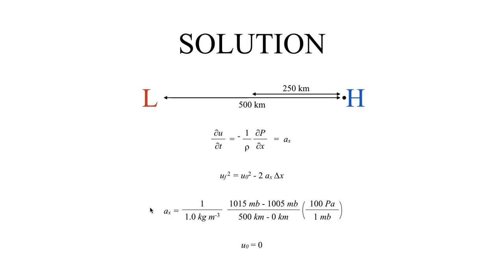If we calculate what that pressure gradient force is, which is our acceleration term, we get that this is one over the density, which is just one kilogram per meter cubed, times our differences in pressure, so 1015 millibars minus 1005 millibars, divided by the distance between those two pressure systems, the 500 kilometer distance that separates the low from the high.